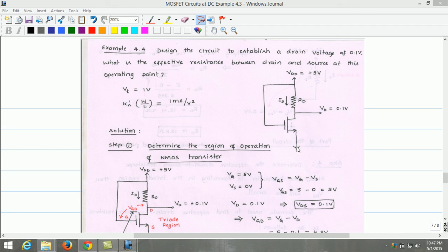The source is at ground potential. So from this, we can estimate VGS. VGS equals VG minus VS. VG is 5 volt, VS is 0 volt. Therefore VGS is 5 volt.